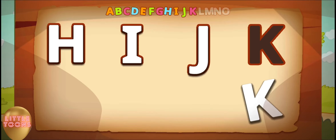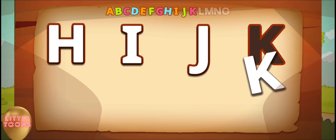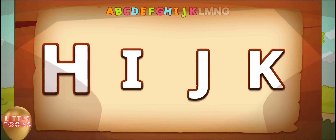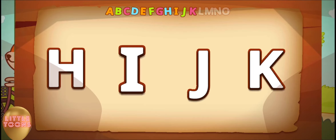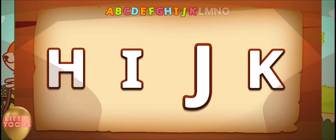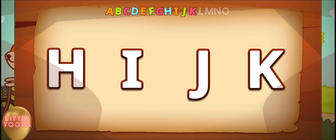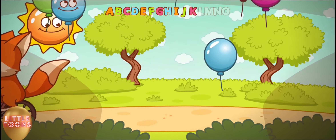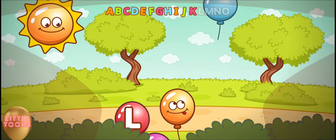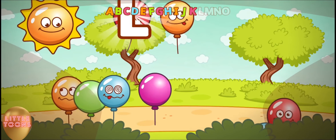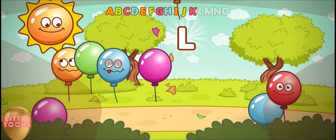J, J for juice. Can you guess this one? It's K, K for kite. Now let's learn the next letters. What comes after K? Here is the balloon with the letter L.